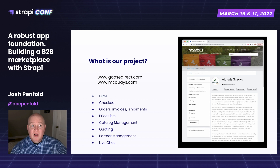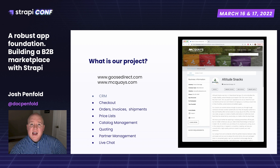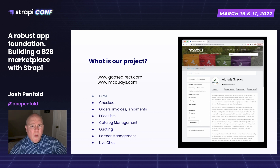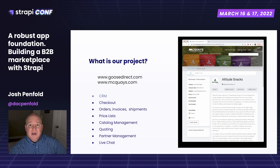Our project is called McQuaise.com and GooseDirect.com. Both are using the same Strapi engine. One is targeted towards the wholesale B2B retail trade and McQuaise is targeted towards the industrial B2B trade. What we're able to build with Strapi is a fully integrated CRM, checkout, orders, invoices, and shipments including partial invoicing. Everything you see there is built off Strapi 100%, except for live chat.